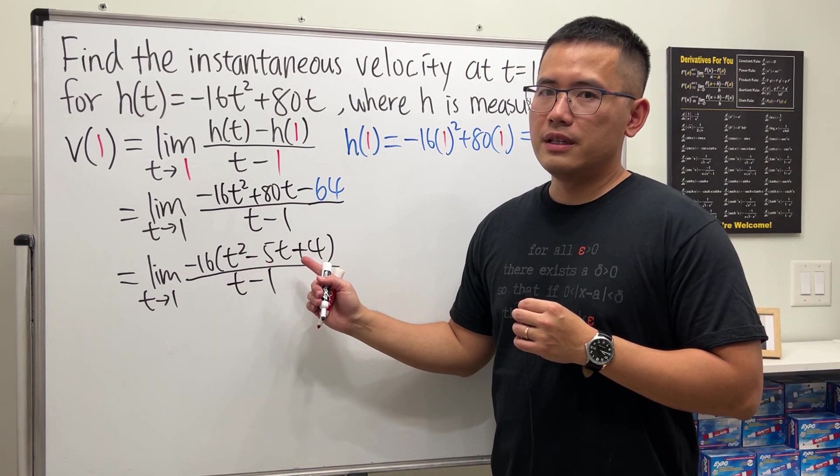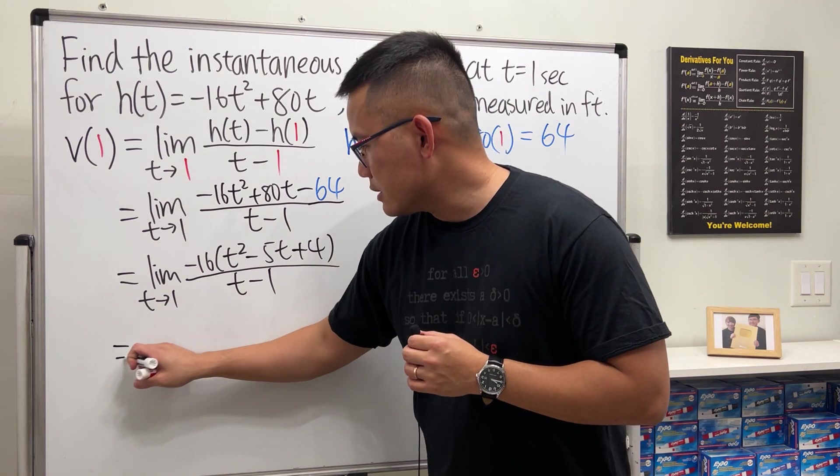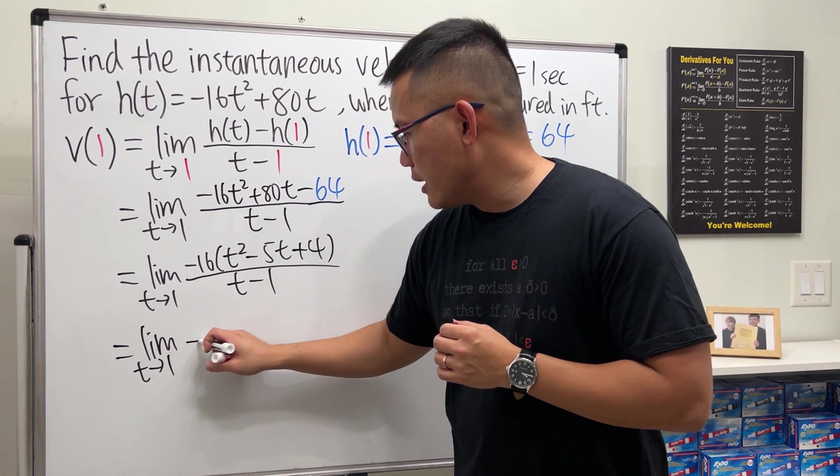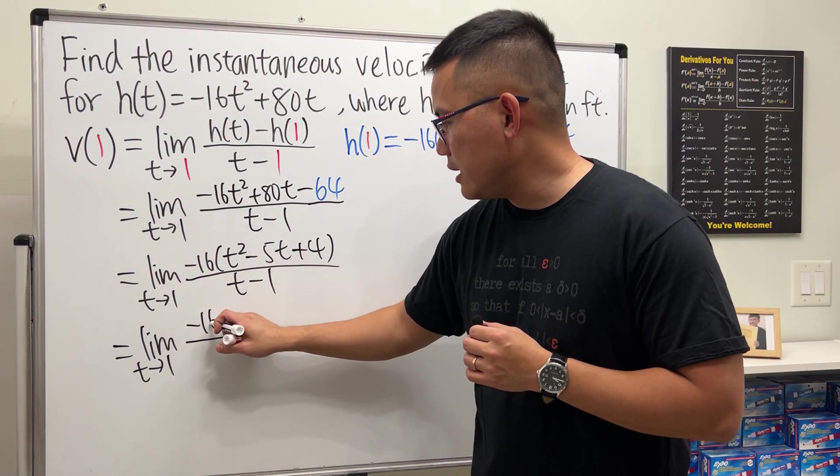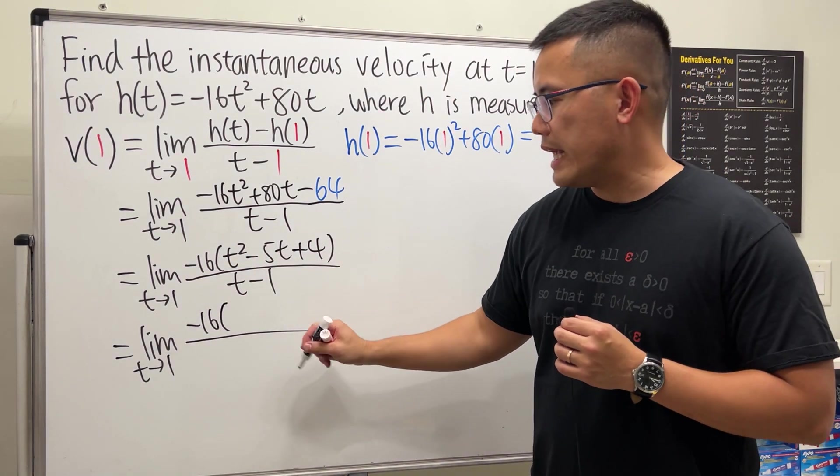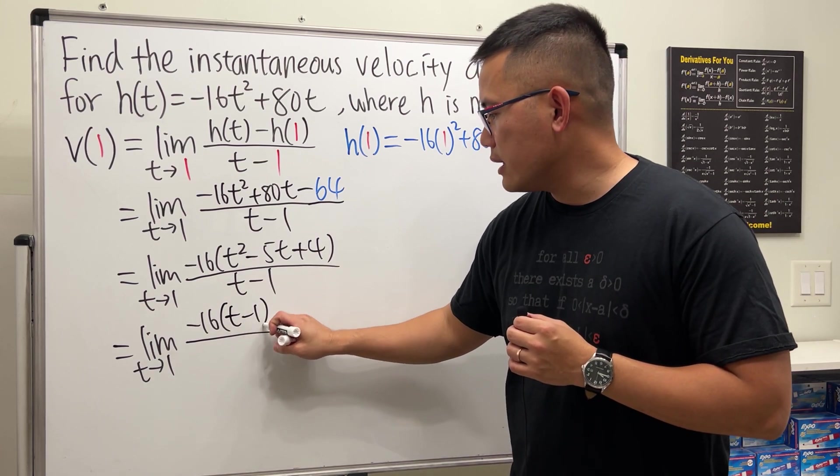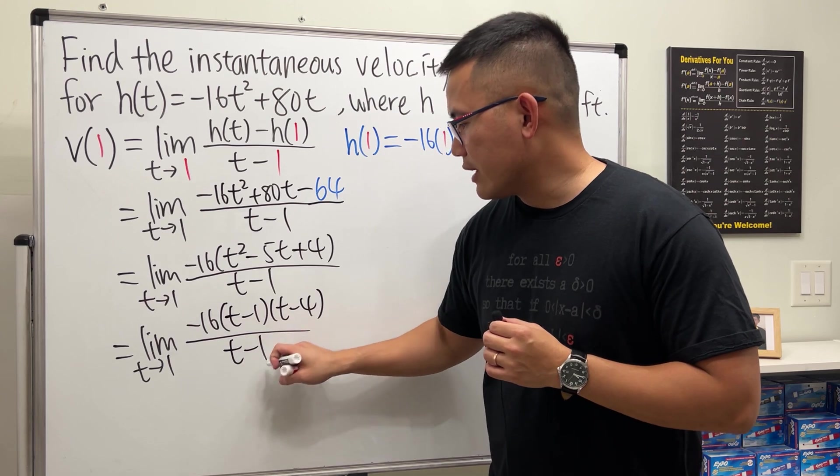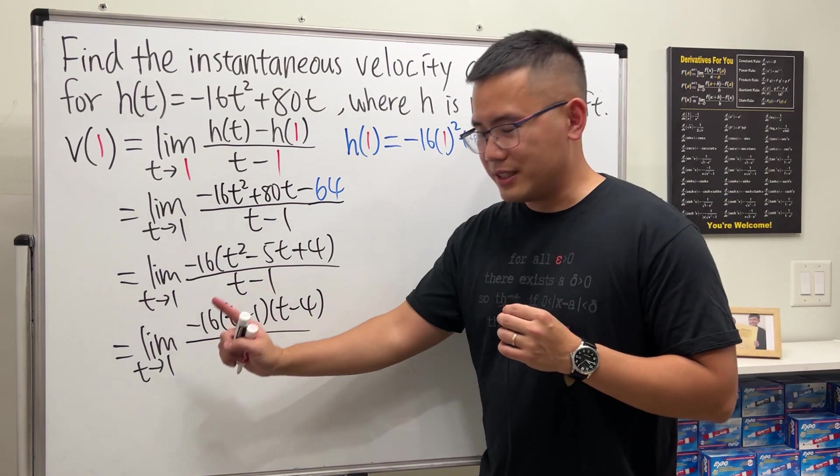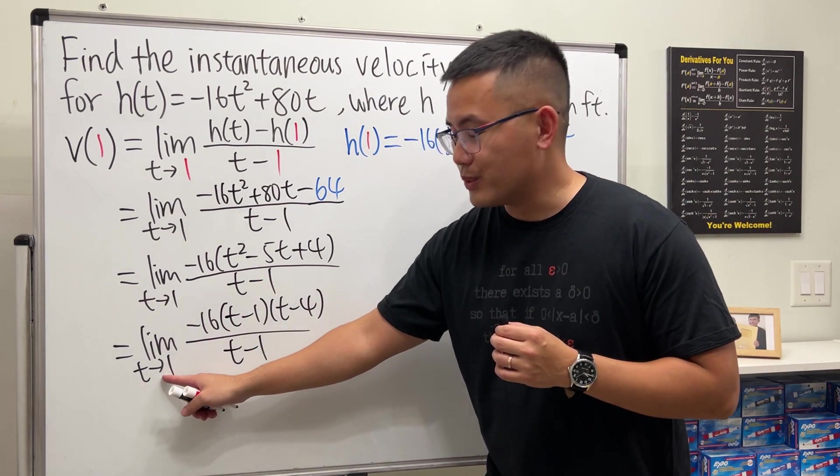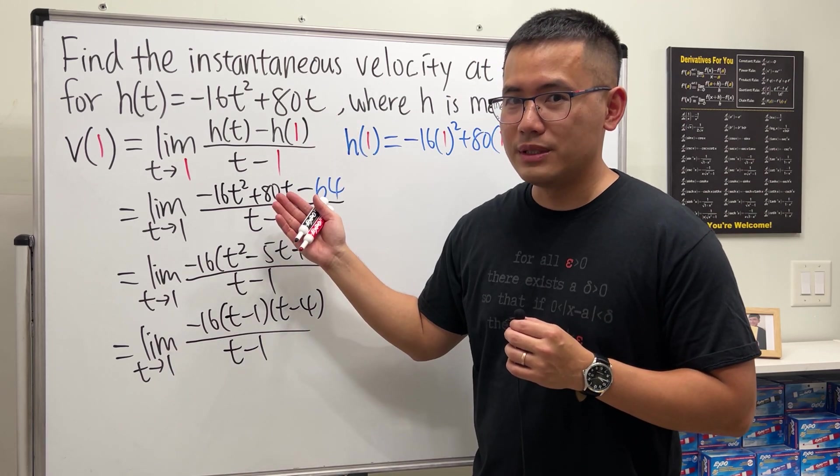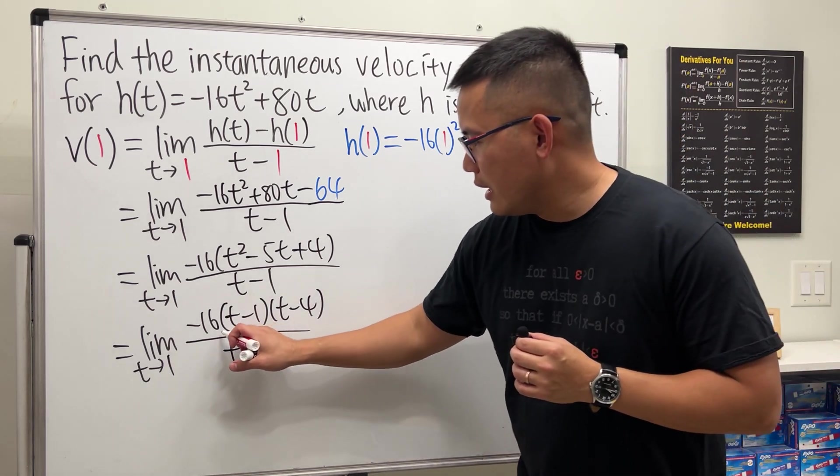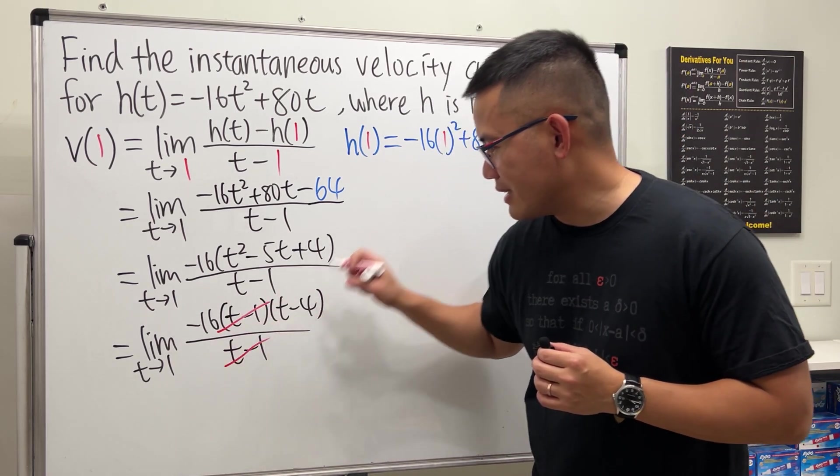This right here can be factored again. So let's go ahead and do that. So this is the limit as t goes to 1. And again, we have that negative 16. Factor this trinomial. We get t minus 1 times t minus 4. And then on the bottom, we have that t minus 1. As you can see, as t goes to 1, we have the 0 over 0 situation. Then we can expect to have the t minus 1 to be canceled. And it is happening right now. So that's the best moment.